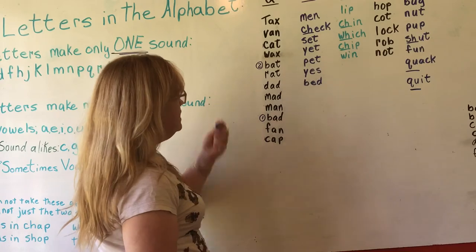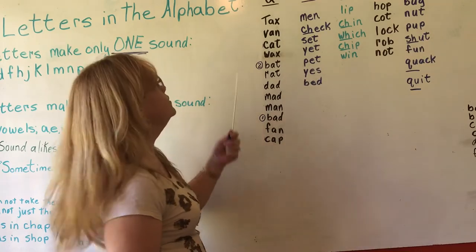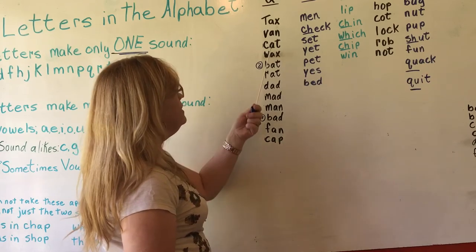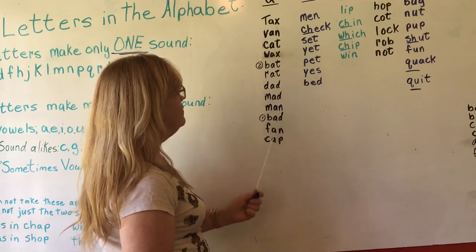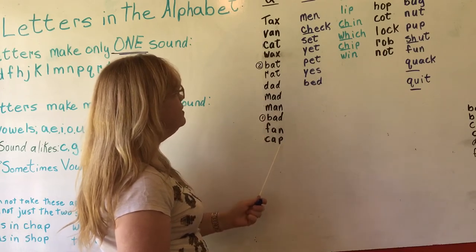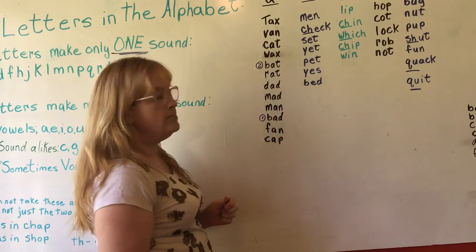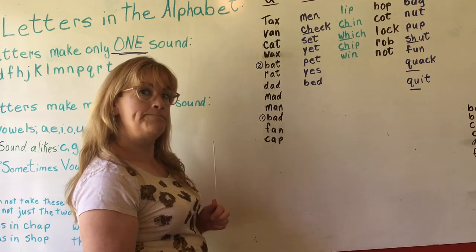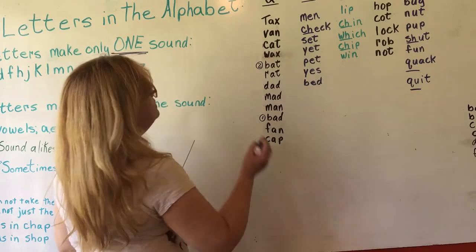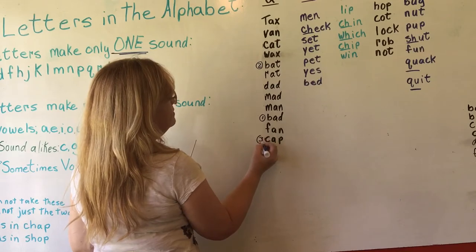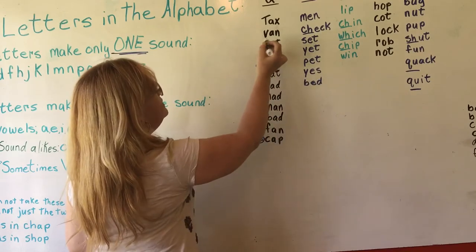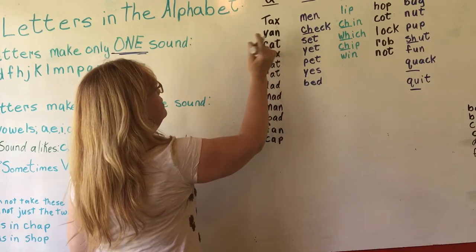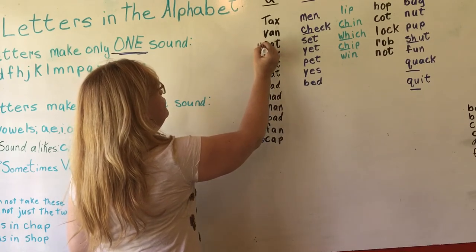Now let's see if there are any C words. We have two — cat and cap. They both have C, both have A, so we go to the third letter: P and T. Does P come before T or T before P? P comes first. So cap would be next, and then cat after that.